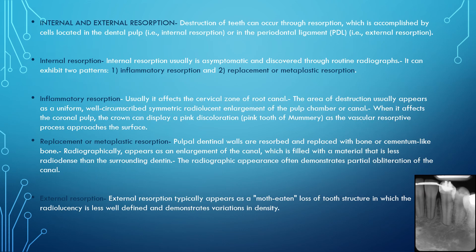Resorption can be internal or external. The destruction of teeth by internal resorption is due to cells located in the dental pulp, whereas external resorption is due to damage to the PDL cells. Internal resorption is usually asymptomatic and discovered through routine radiographs. It exhibits two patterns: inflammatory resorption or replacement/metaplastic resorption.